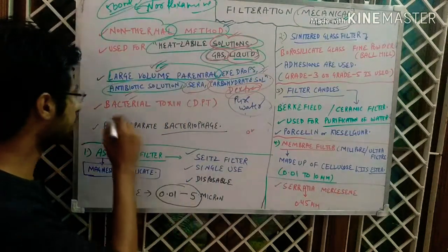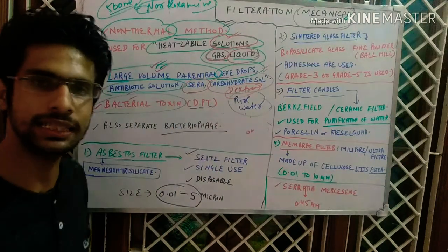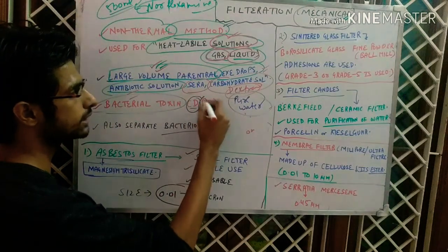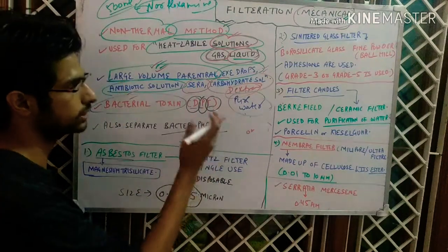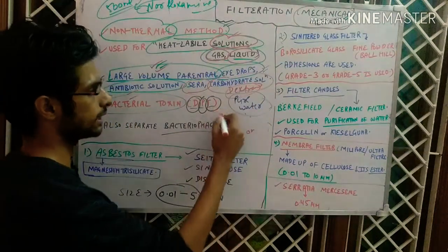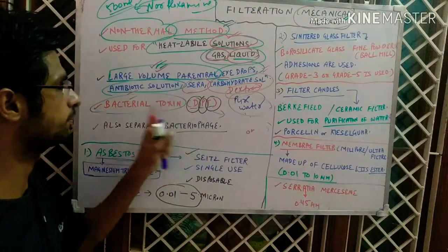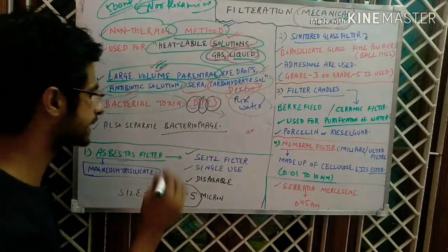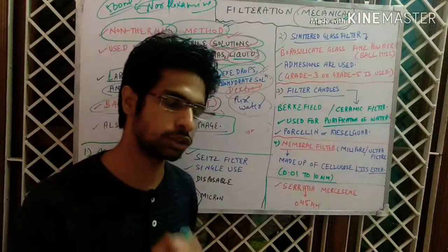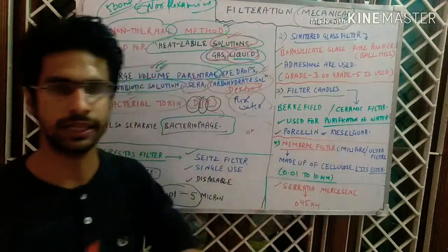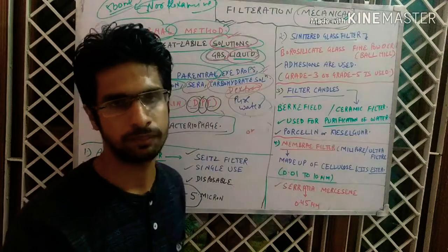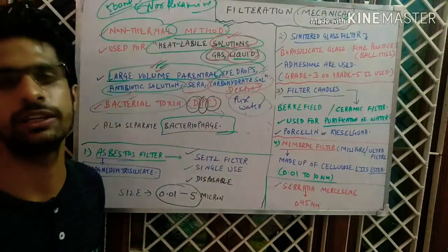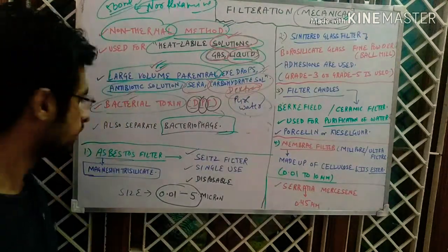Bacterial toxins are also sterilized by filtration — notably the DPT vaccine components: diphtheria, pertussis, and tetanus. These three bacterial toxins are sterilized by filtration, and this is an important exam question for ICMR, GPAT, and NIPER examinations. Also note bacteriophage — a virus that infects bacteria — also gets separated during filtration, making it an important aspect of this sterilization method.